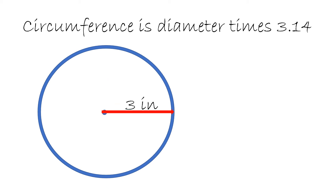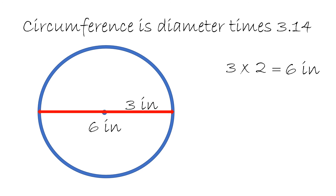Here we are only given the radius and we need the diameter. So in order to find the diameter, we take the radius, which is 3, times 2 — double it — and we get 6 inches. We then take 6 inches times 3.14 and that will be 18.85 inches.